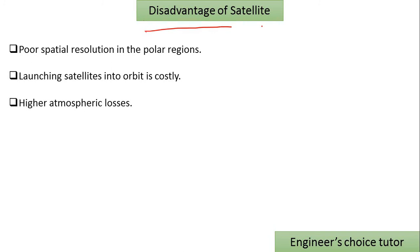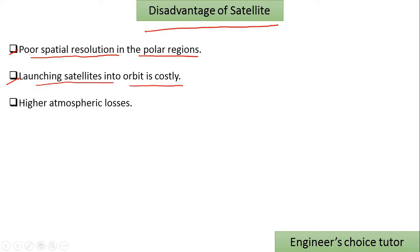Disadvantages of satellites: First, poor spatial resolution in the polar region — the spatial resolution is very low. Second, launching satellites into orbit is costly. Third, higher atmospheric losses — satellites experience many losses in the atmosphere.